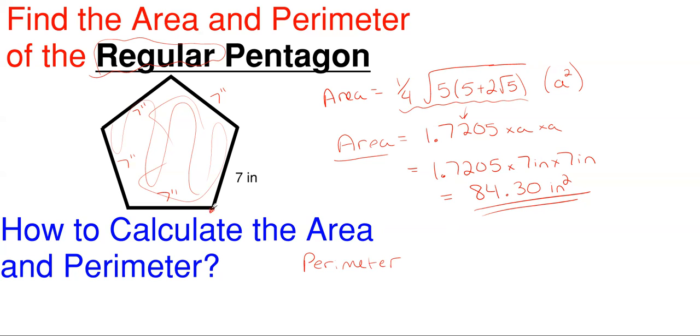So pretty much with perimeter, you just want to start at one point and then work your way around adding up all the dimensions you encounter until you come back to your starting point.